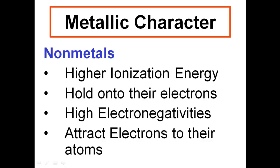Nonmetals have higher ionization energies. It's going to be harder for an atom to remove an electron from a nonmetal. They tend to hold on to their electrons much stronger because they are smaller atoms. Their nuclei are closer to the edge of their electron clouds. They also have high electronegativities and attract electrons into their clouds.